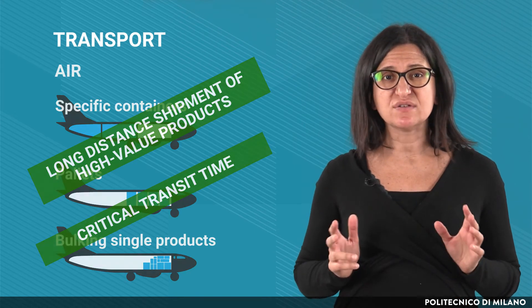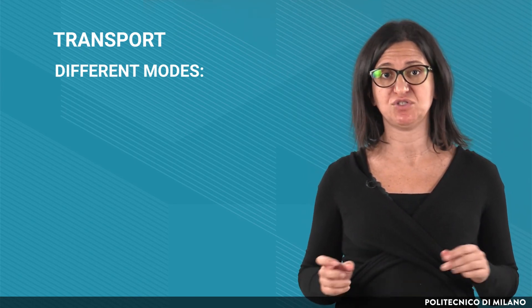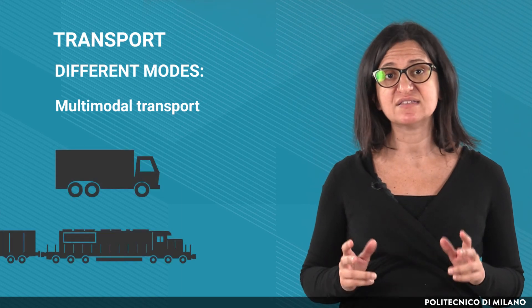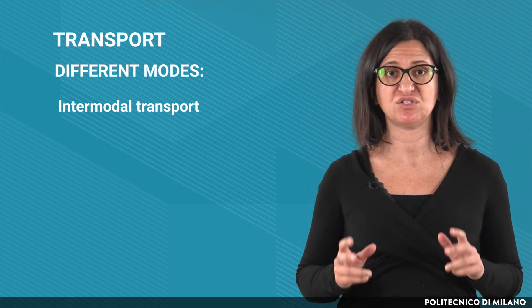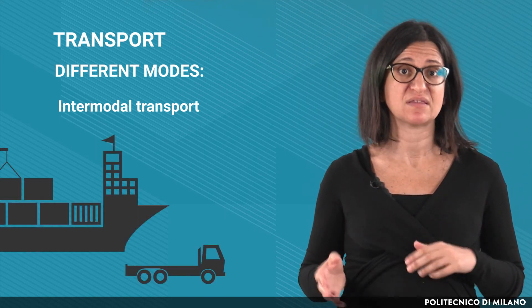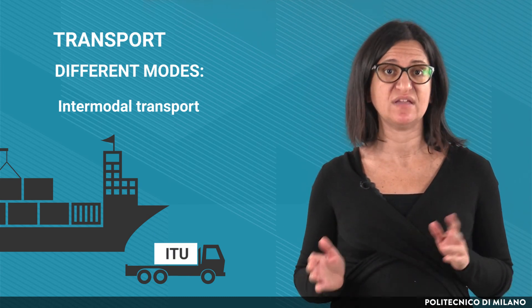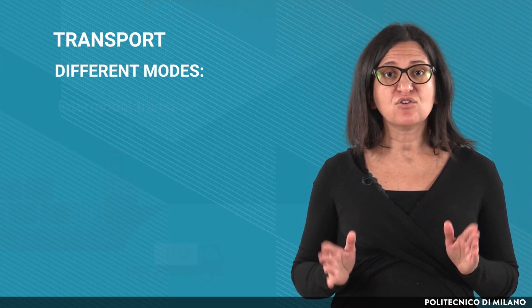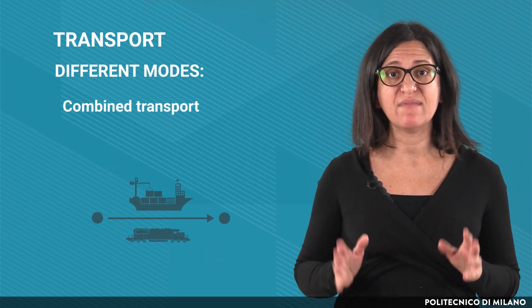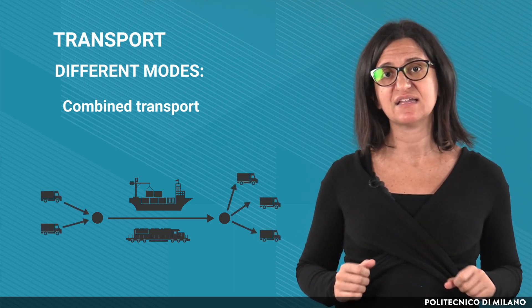When different transport modes are combined, it is possible to identify three main options. Multimodal transport, in which at least two different transport modes are used. Intermodal transport, in which different transport modes are used but always moving the same unit of transport — the so-called ITU, intermodal transport unit, for example a container. And combined transport, in which the main path is managed by rail or water, and the initial and final parts are instead managed by truck.